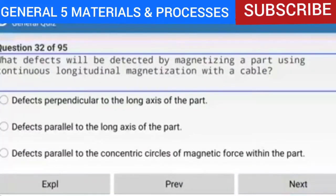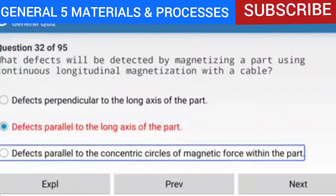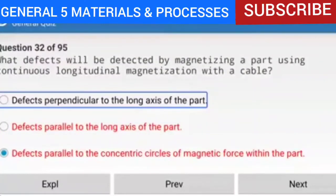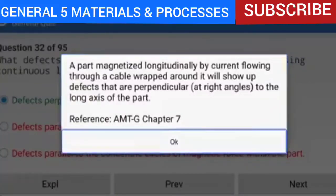Question 32 of 95: What defects will be detected by magnetizing a part using continuous longitudinal magnetization with a cable? The answer is defects perpendicular to the long axis of the part. A part magnetized longitudinally by current flowing through a cable wrapped around it will show up defects that are perpendicular — at right angles — to the long axis of the part.